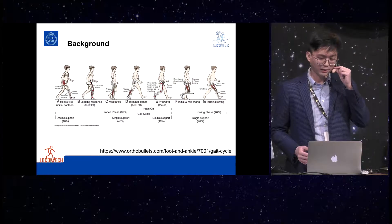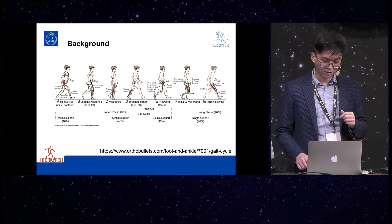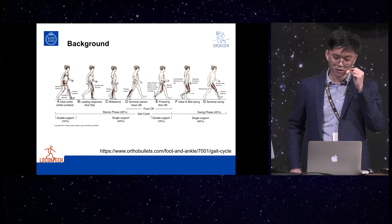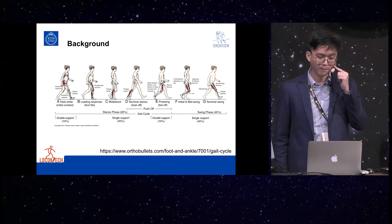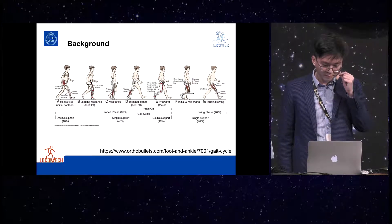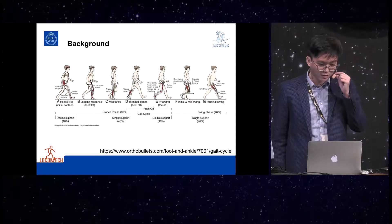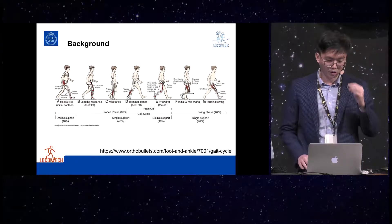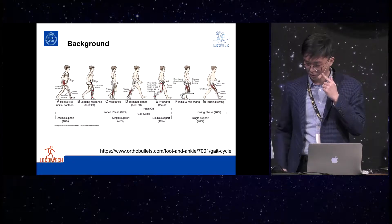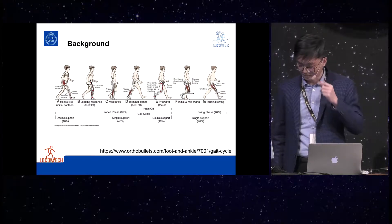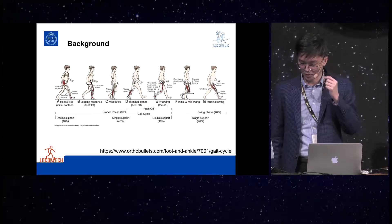During normal walking, the stance phase represents 60% of the gait cycle and the swing phase 40%. In the stance phase, we can break it down into five parts: the heel strike, the loading response, the mid stance, terminal stance, and pre-swing.